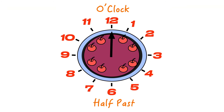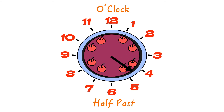When our long hand is pointing to the 12, we should know that is o'clock, meaning no minutes have passed — it's the start of the next hour. We also should know that when the long hand is pointing to the 6, that means it is half past the hour because the minute hand has moved halfway around the clock to reach the 6.